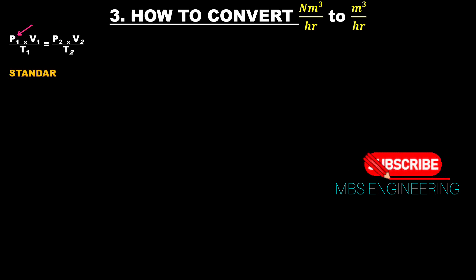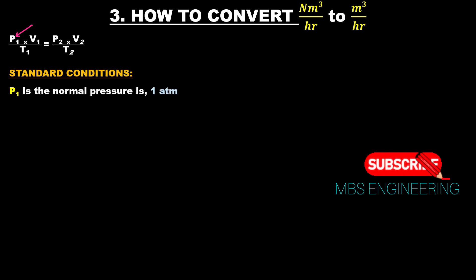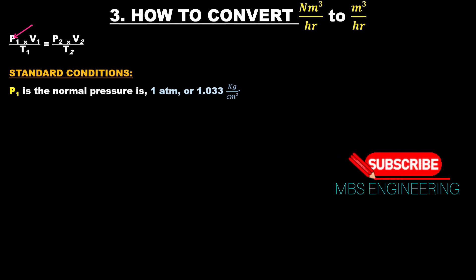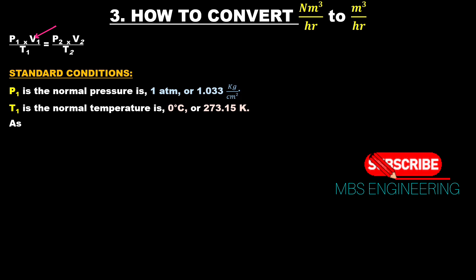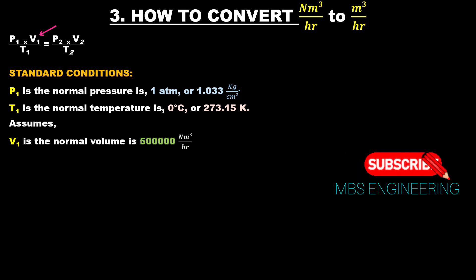For this example, the standard conditions are: P1 = 1 atmospheric pressure or 1.033 kg/cm²; T1 = 0 degrees Celsius or 273.15 Kelvin; and V1 (assumed normal volume) = 500,000 Nm³/hr.